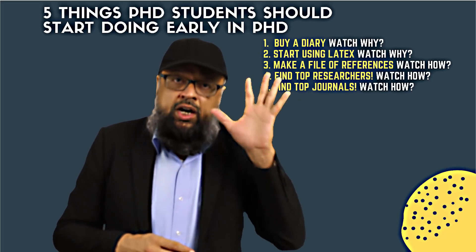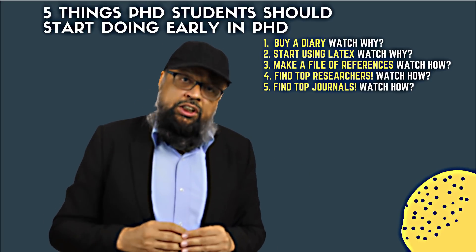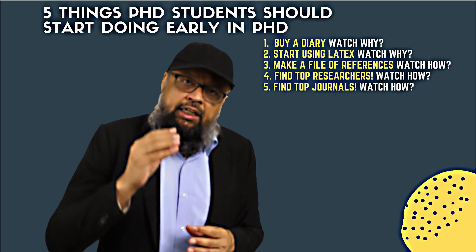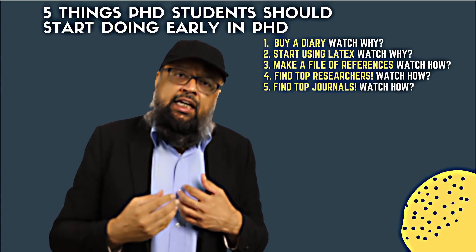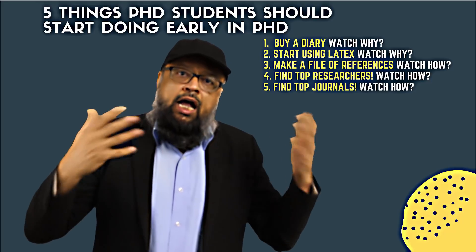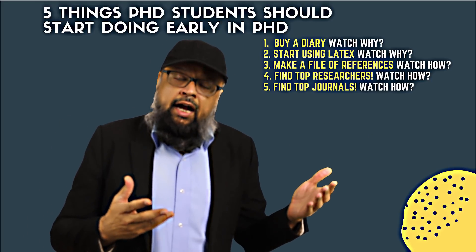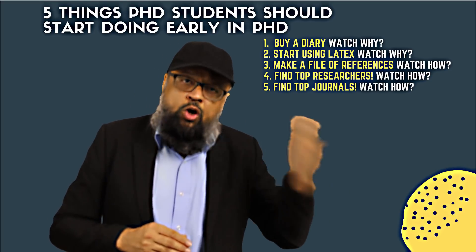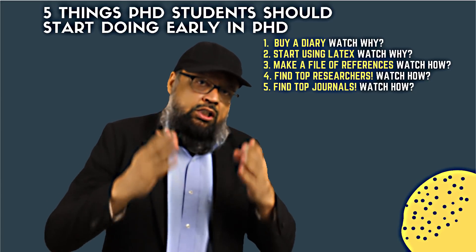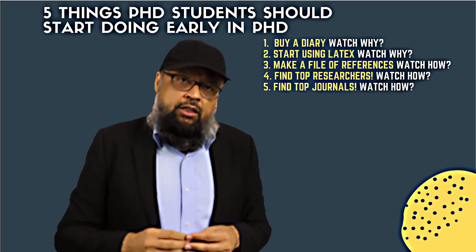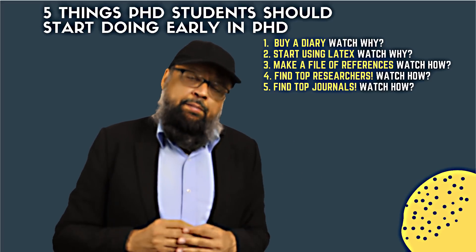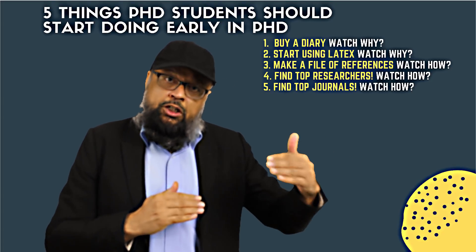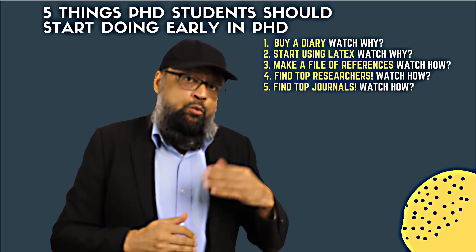A conference paper will give you zero value when applying for academic positions — and this was the mistake I made during my PhD. At that time there was a hype of publishing in IEEE conferences, and out of my 11 publications, 10 were in IEEE conferences. I should have focused on journals. From very early in your career, you should focus on publishing journal papers. Make a list of 15 to 20 journals with impact factors from 0.2 to 5.